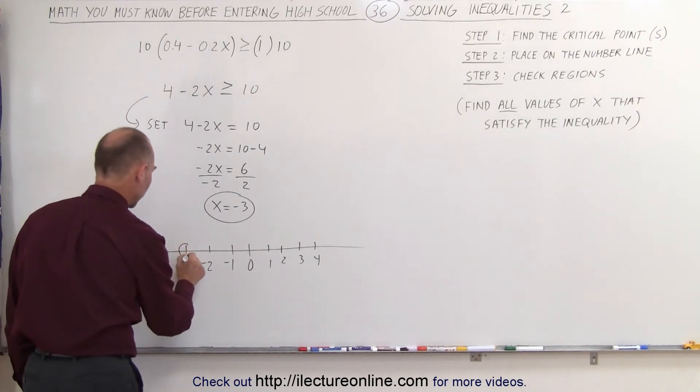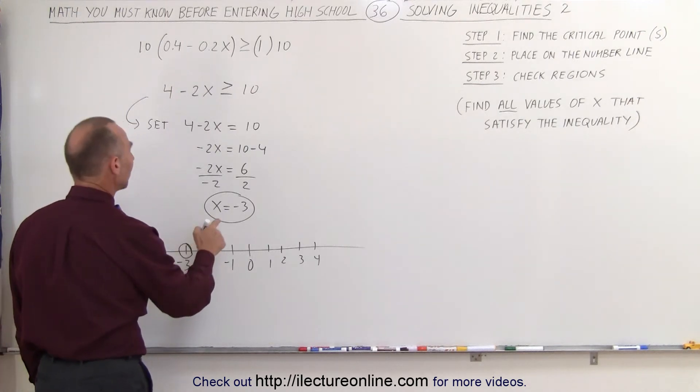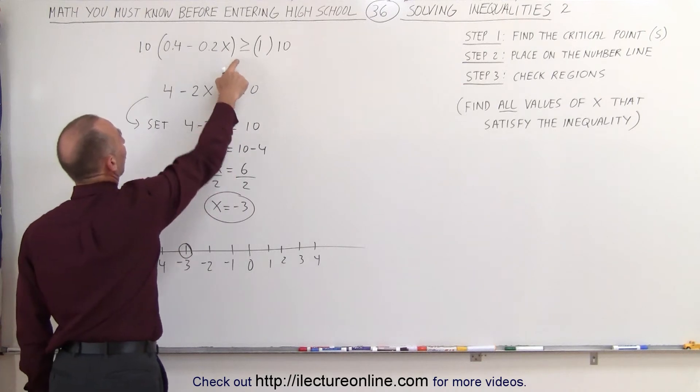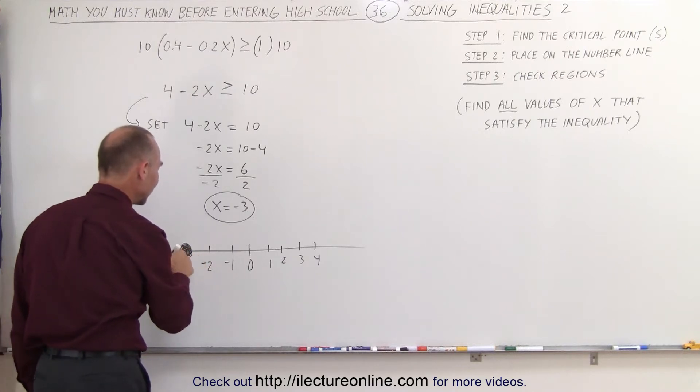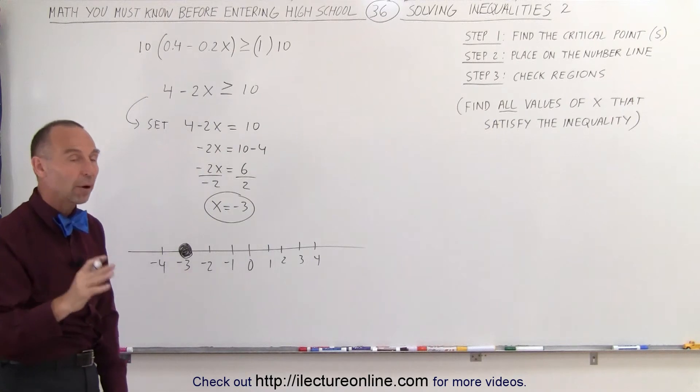We draw a circle around it. Notice, since it says greater than or equal to, means the critical point is included in the answer, so we're going to fill in that little circle, which indicates that the number negative 3 is part of the solution.